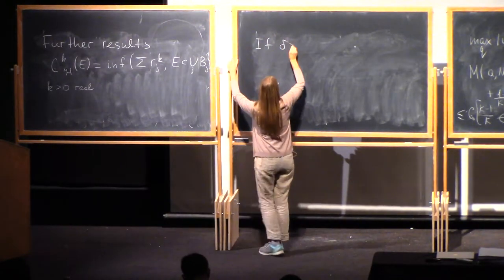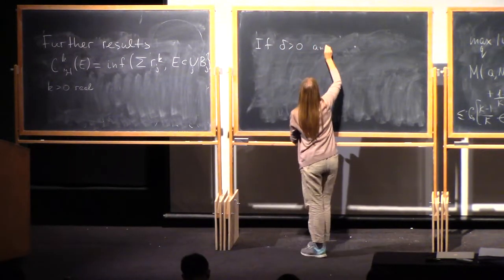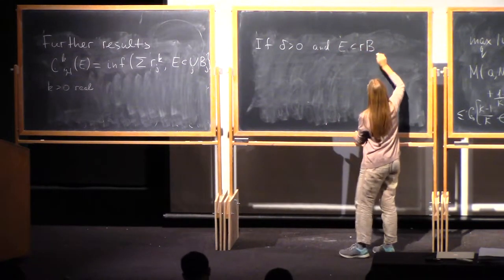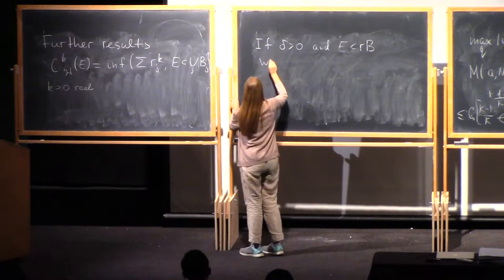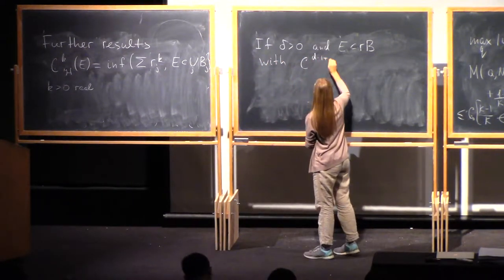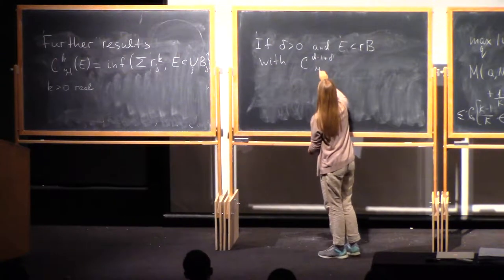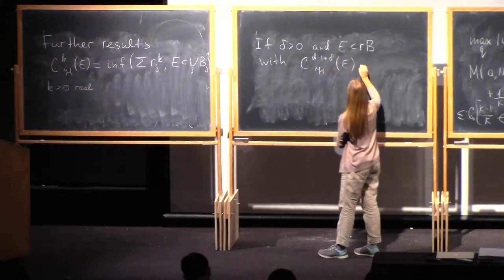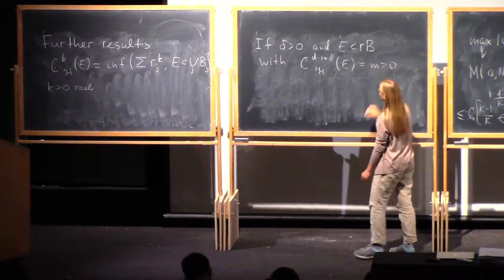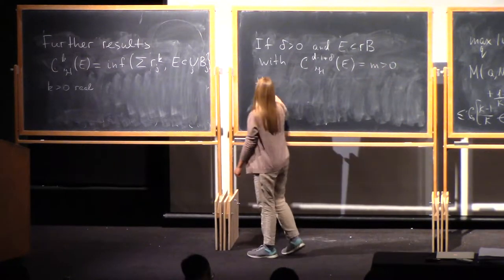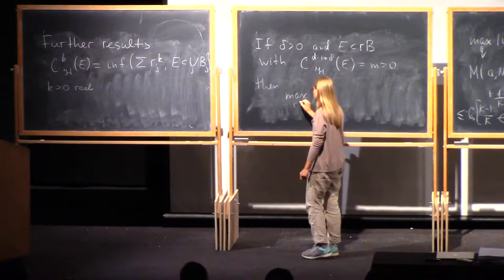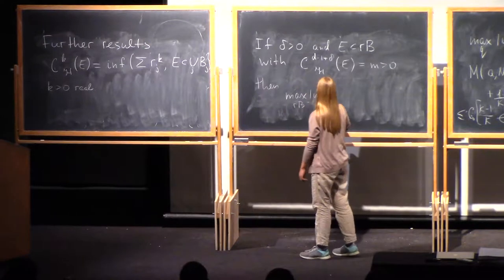If delta is positive and E is set as before with d minus 1 plus delta Hausdorff content of E fixed, then there is an estimate very similar to what we had before, just the same thing.